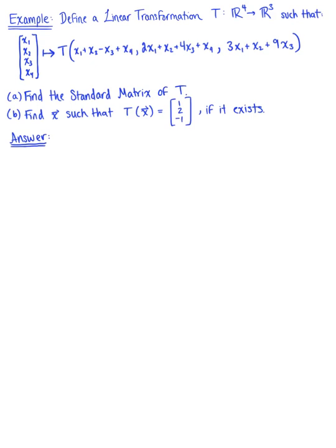Define a linear transformation T from R4 to R3, such that we have this mapping. Our job is to find the standard matrix of this linear transformation T, and then to find a vector x such that the image of vector x under the action of T equals the vector (1, 2, -1), if it exists.